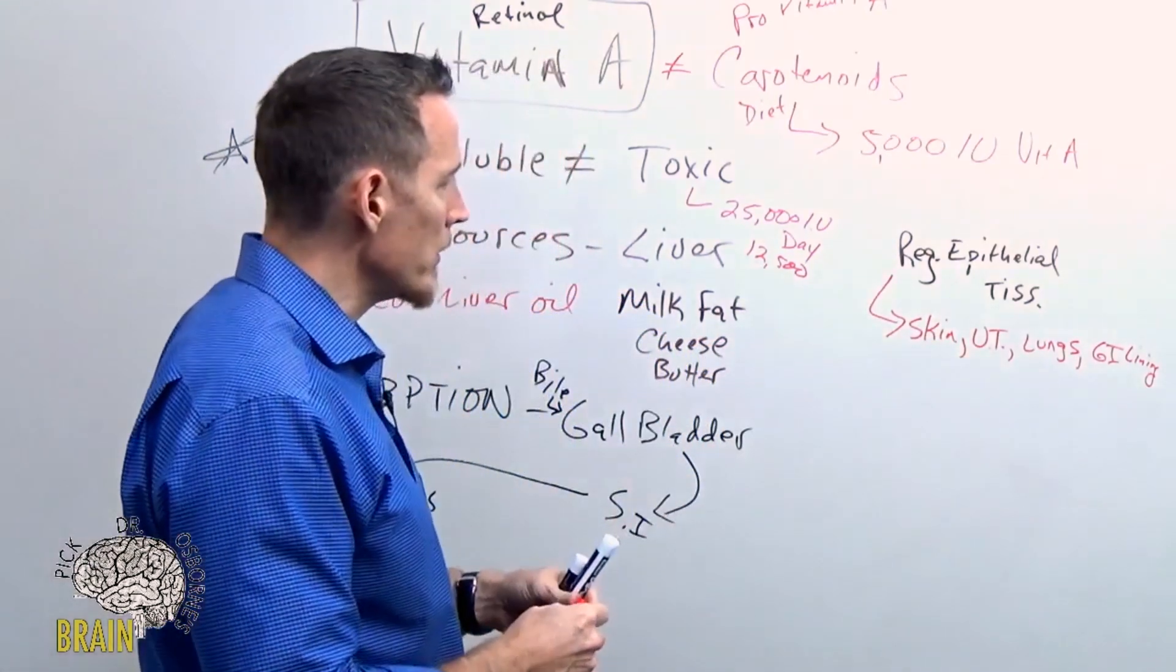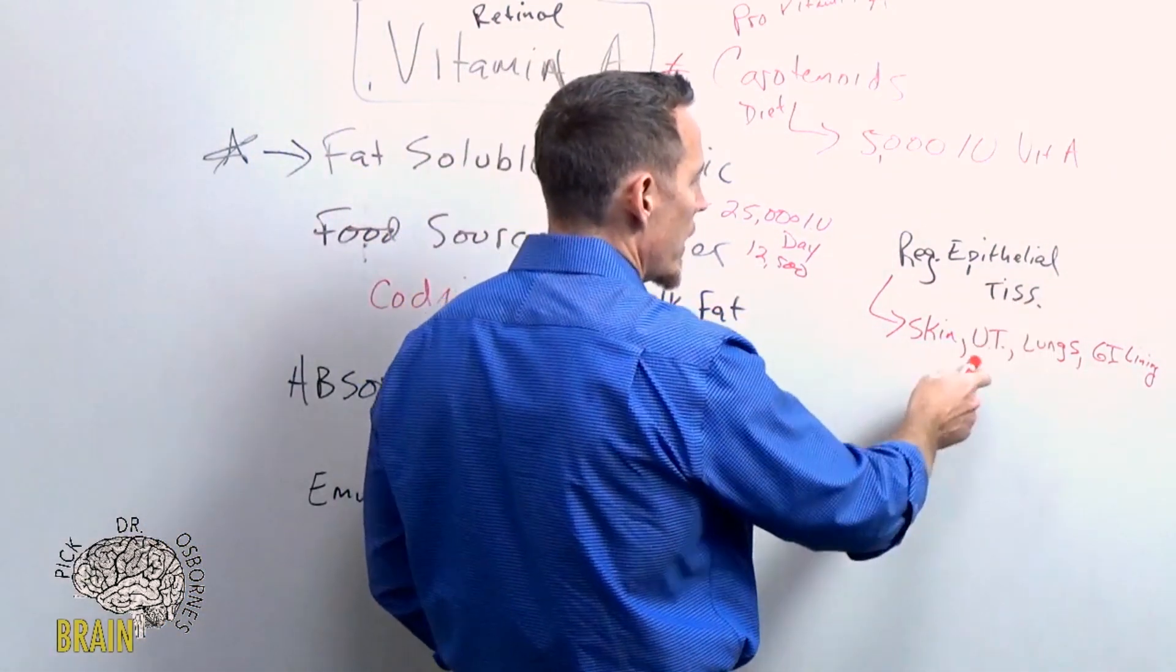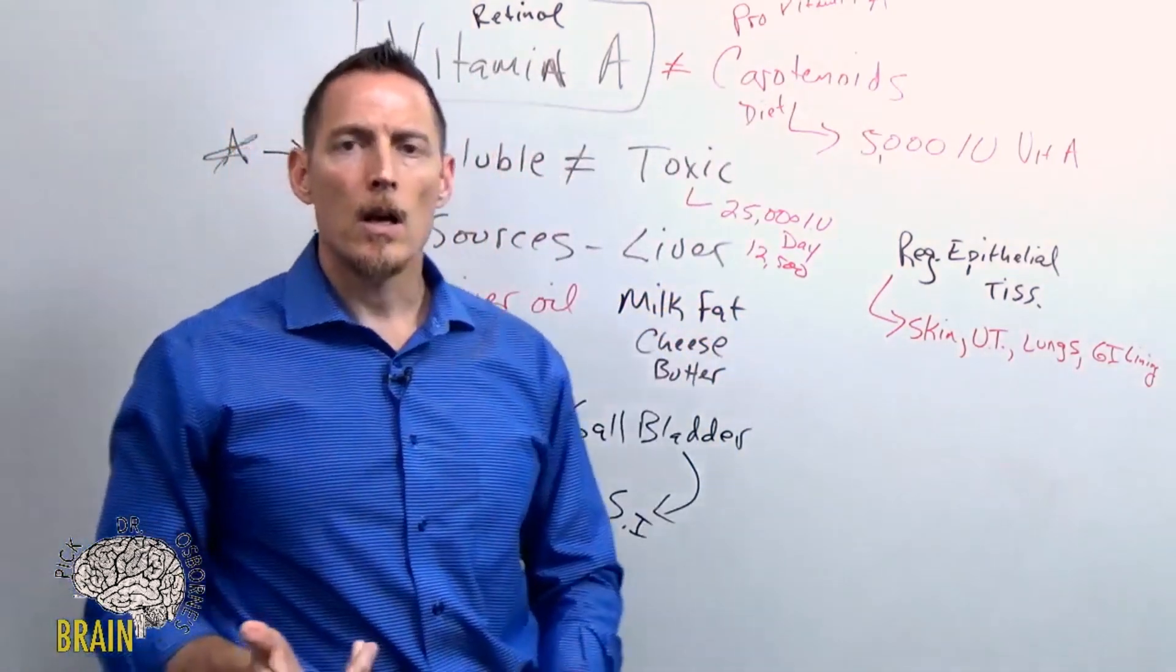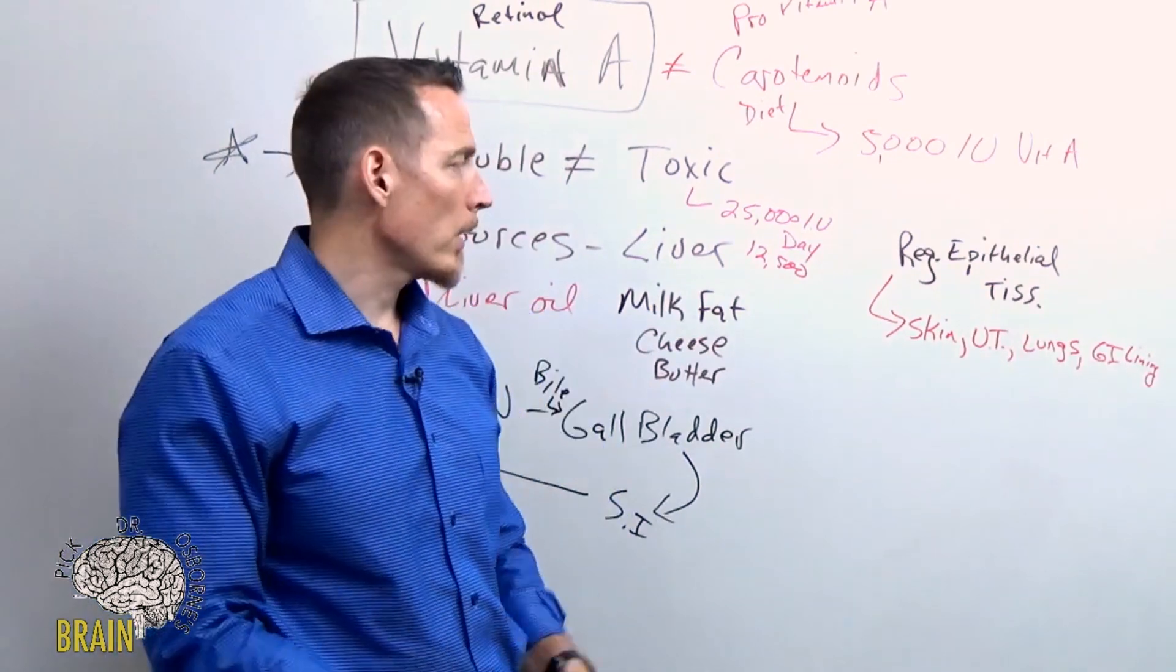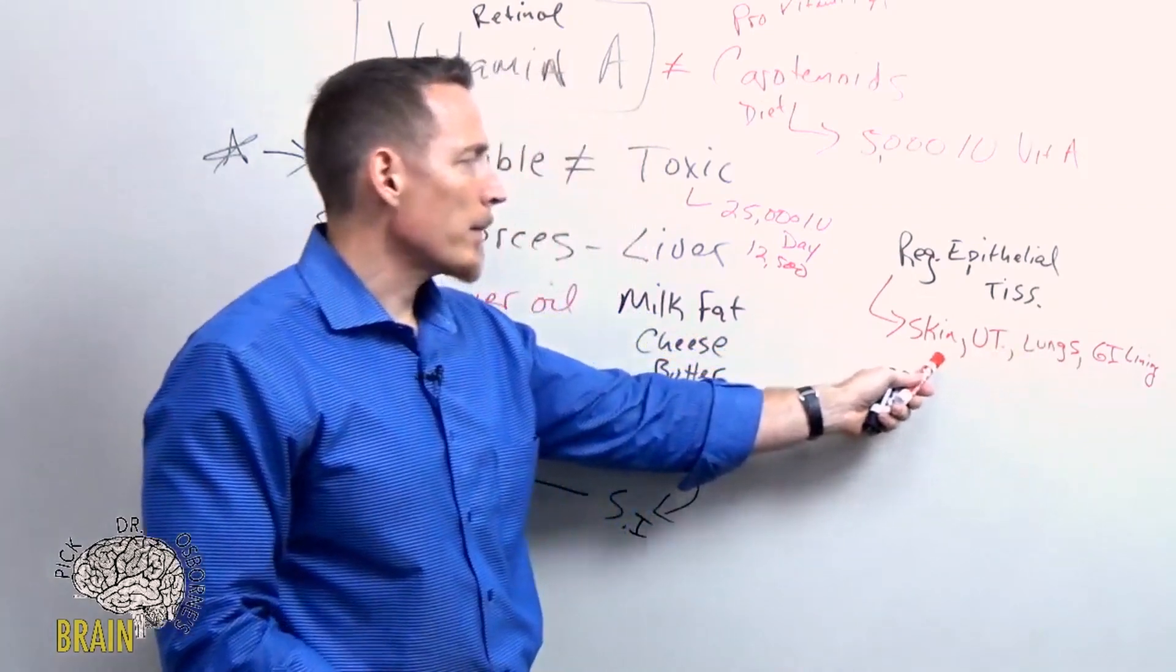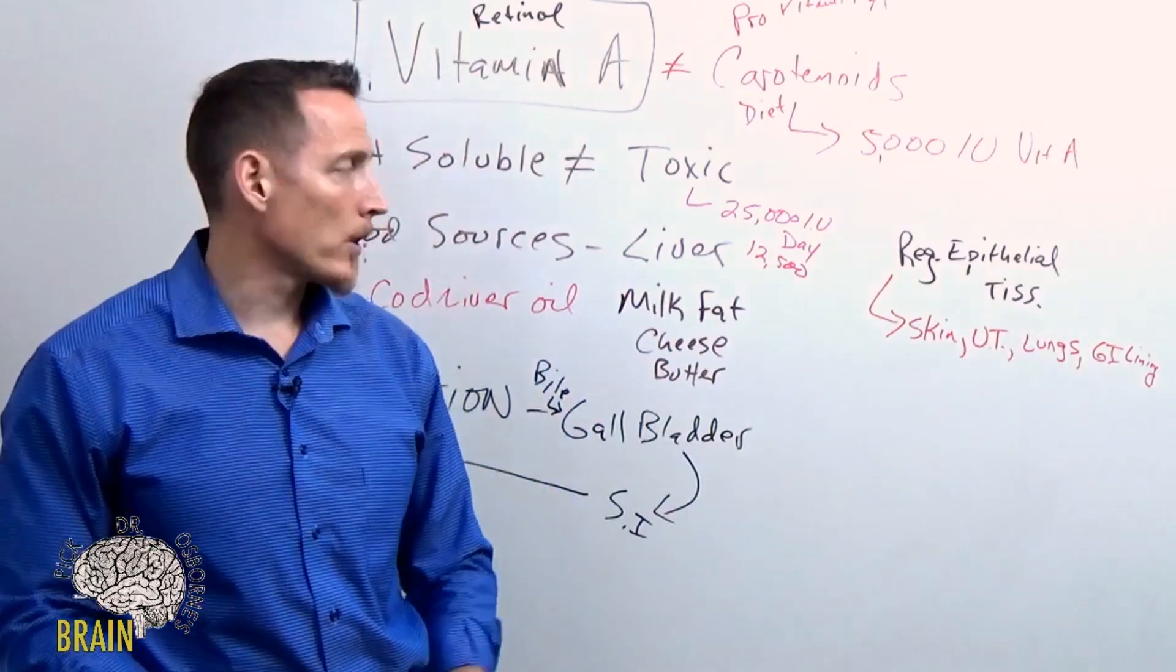Regeneration of epithelial tissues - the skin, the urinary tract, the lungs, and the GI lining - are some of the most critical epithelial tissues in the body. Remember, the blood-brain barrier is a type of barrier tissue as well. So these are all crucial, and vitamin A plays a role in those areas, in those arenas. And without it, you can develop a number of different diseases.